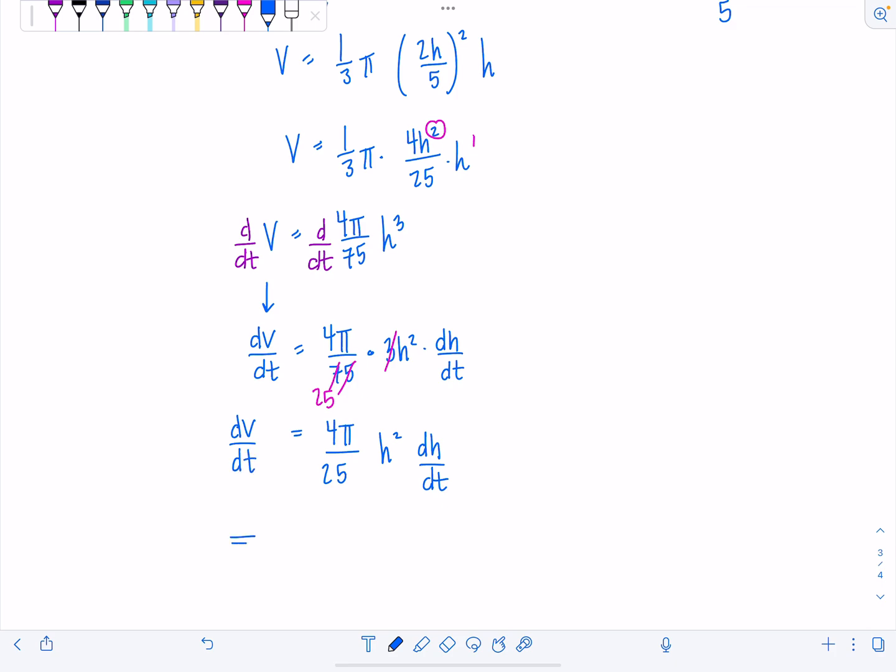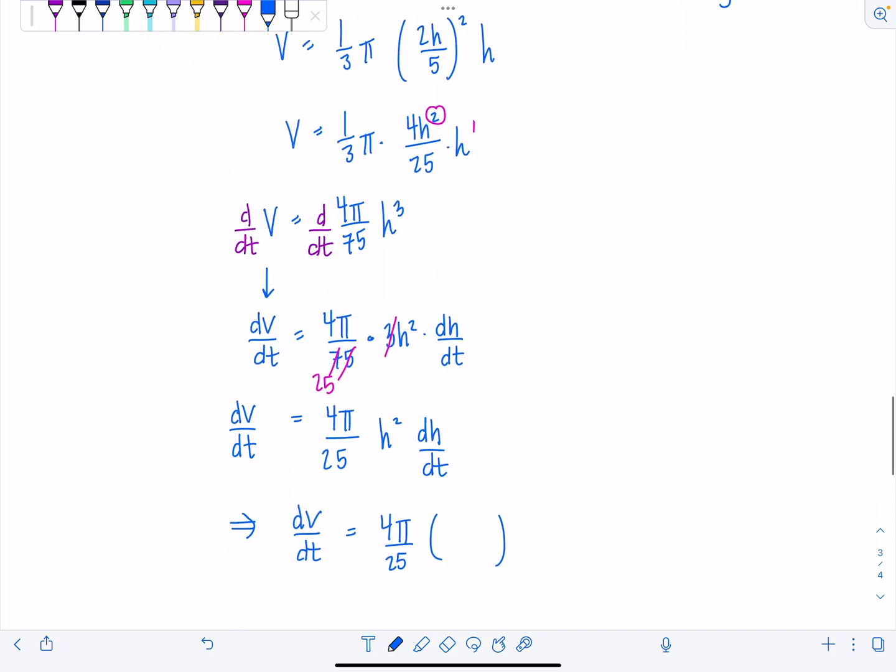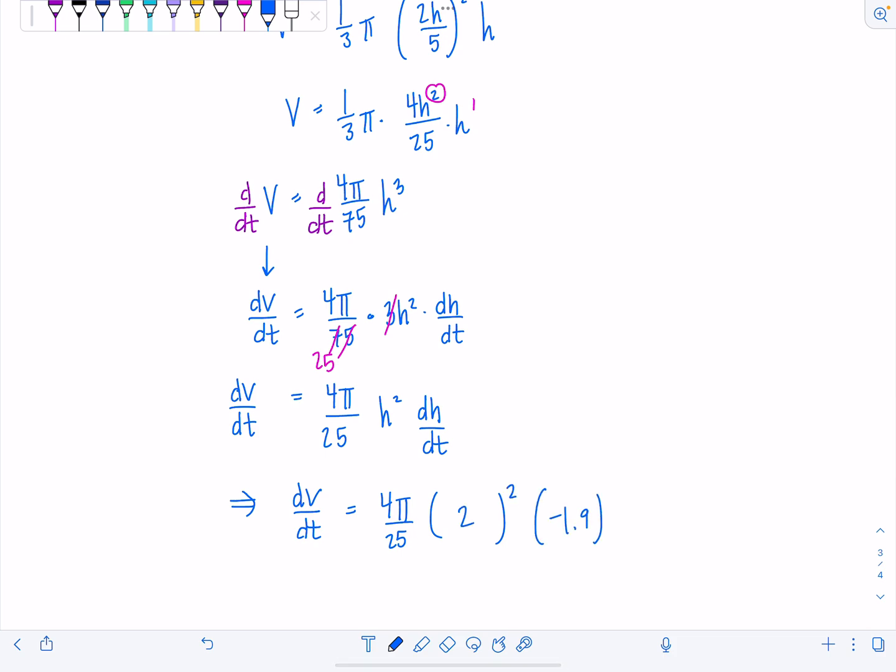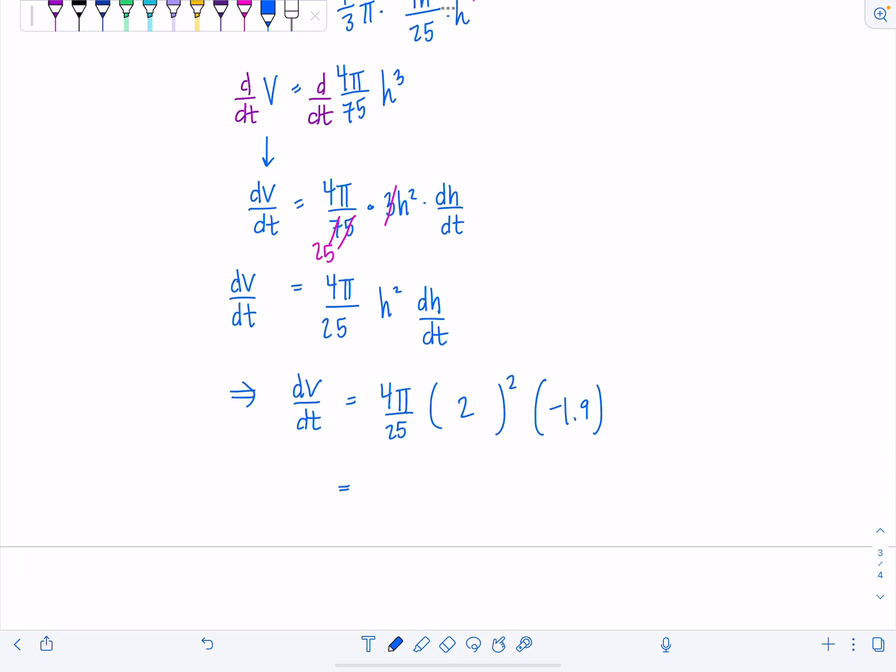Now we substitute in everything they gave us. dV/dt equals four pi over 25 times two squared times negative 1.9. That's 16 pi over 25 times negative 1.9. We're just going to round our answer since they said we could. This is going to be negative 3.82 inches cubed per second. Why inches cubed? Because this is rate of change of the volume. Volume is always measured in three-dimensional units cubed with respect to time, and this problem was being measured in seconds.